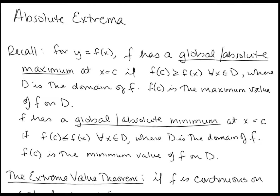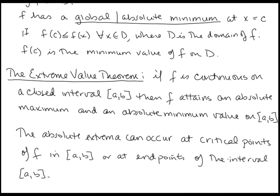Let's start by recalling what we know about Absolute Extrema from Calc 1. For y as a function of x, f has a global or absolute maximum at x equals c if f(c) is greater than or equal to f(x) for all x in the domain — this is what distinguishes absolute from relative extrema. Similarly, f has a global or absolute minimum at x equals c if f(c) is less than or equal to f(x) for all x in the domain. The Extreme Value Theorem tells us that if f is continuous on a closed interval [a, b], then f attains an absolute maximum and minimum on that interval, occurring either at critical points within the interval or at the endpoints a or b.